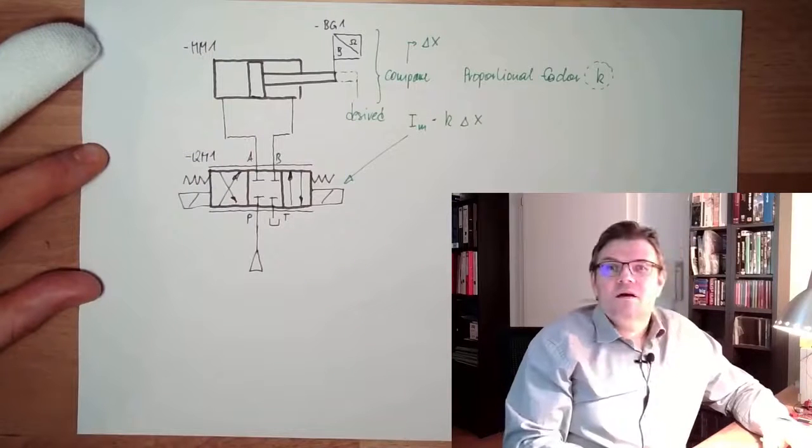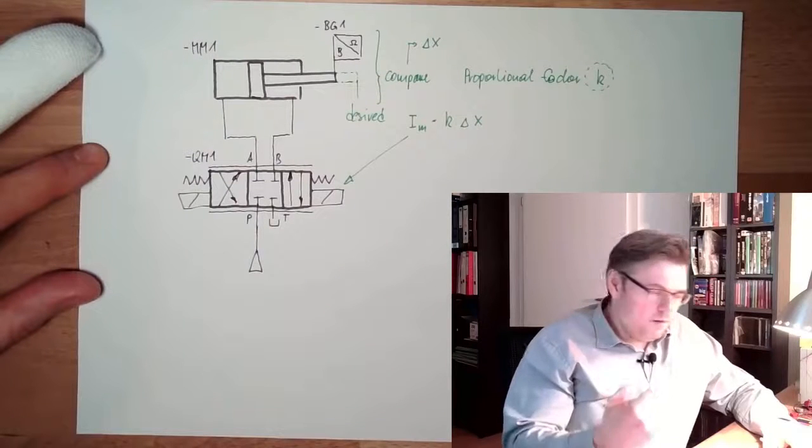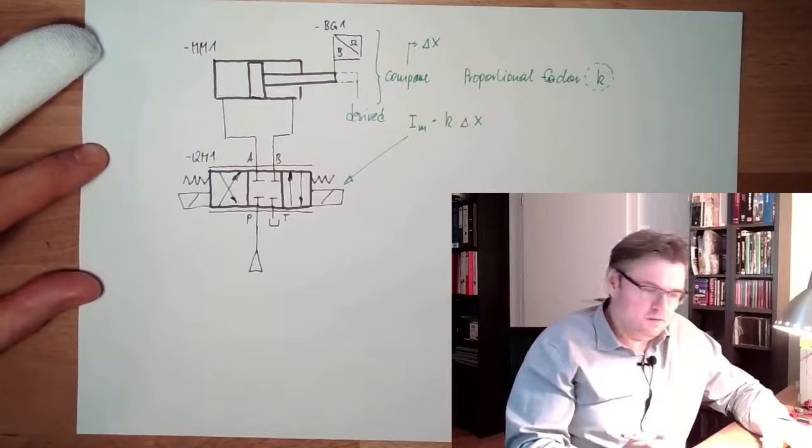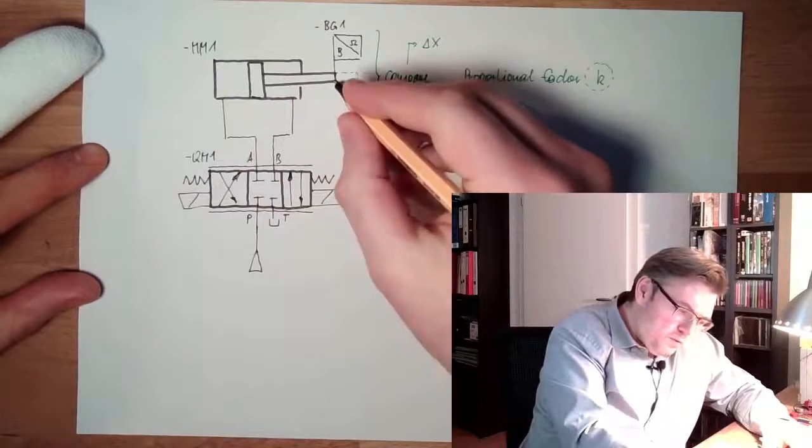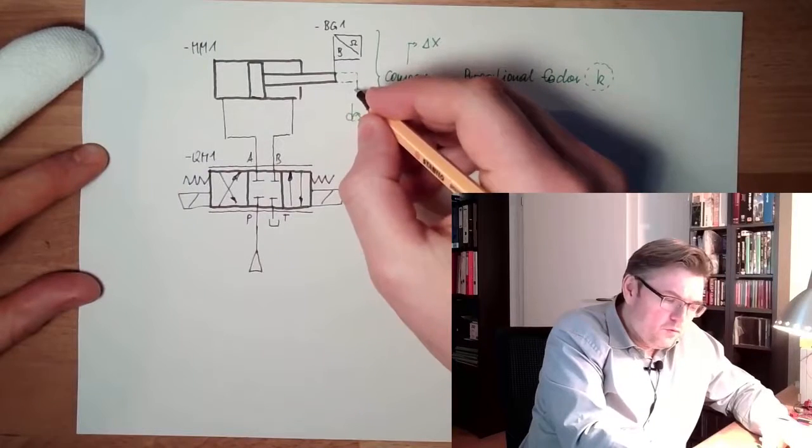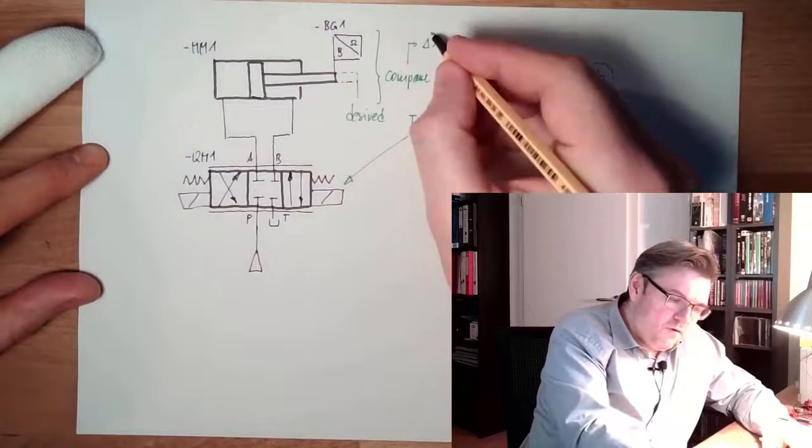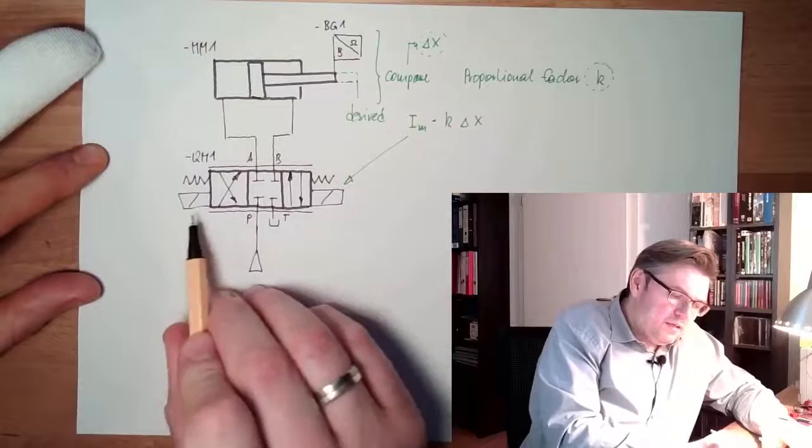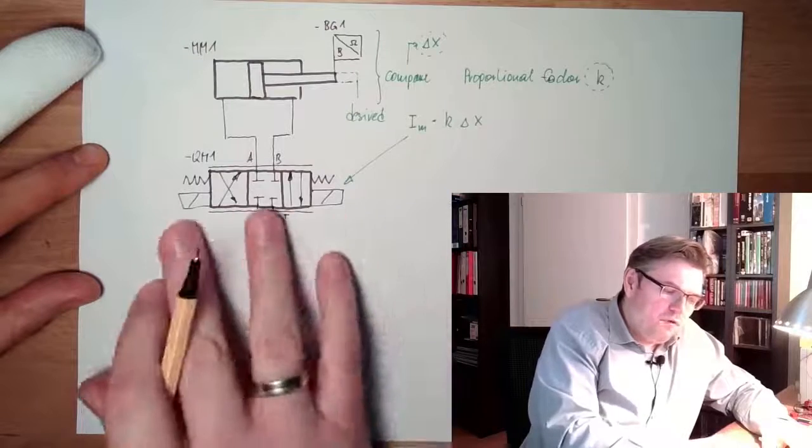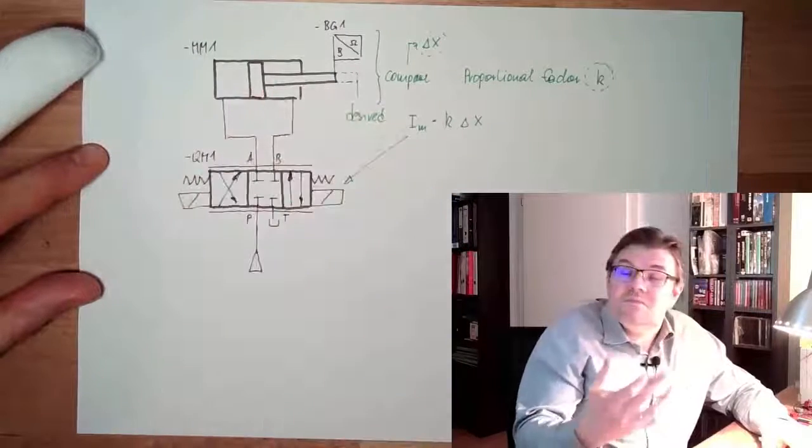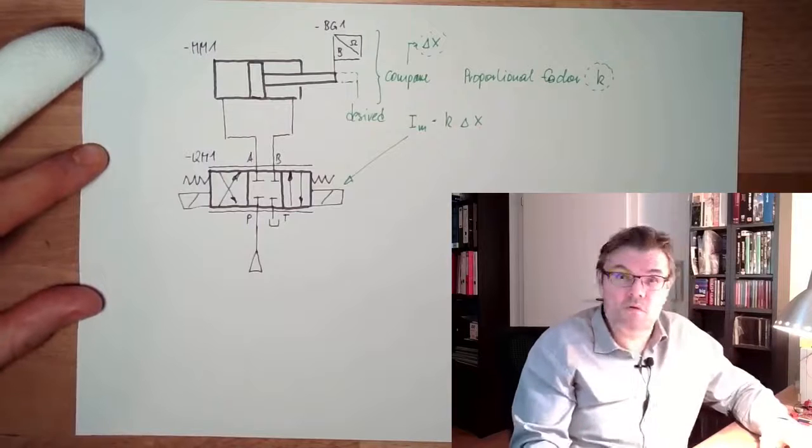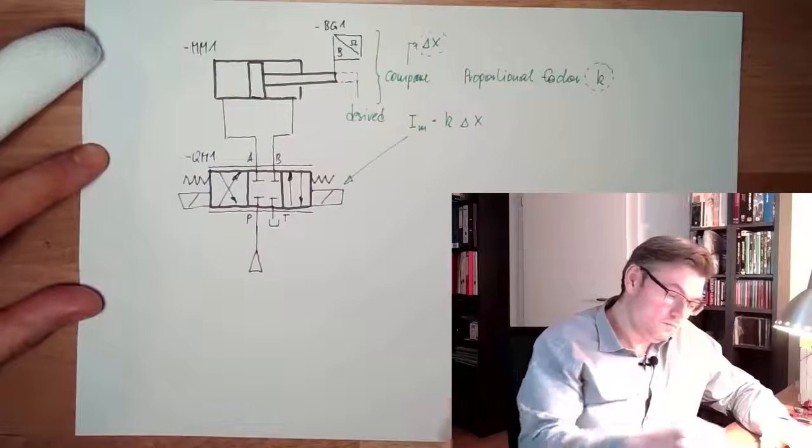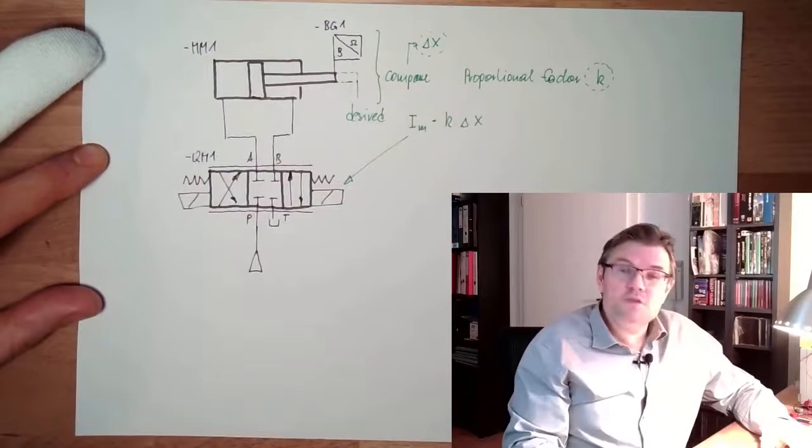So this is a position control loop. Measure position, know where we want to go, depending on the difference, adjust the magnetizing current of the proportional valve, and let the cylinder move. Positioning control loop.